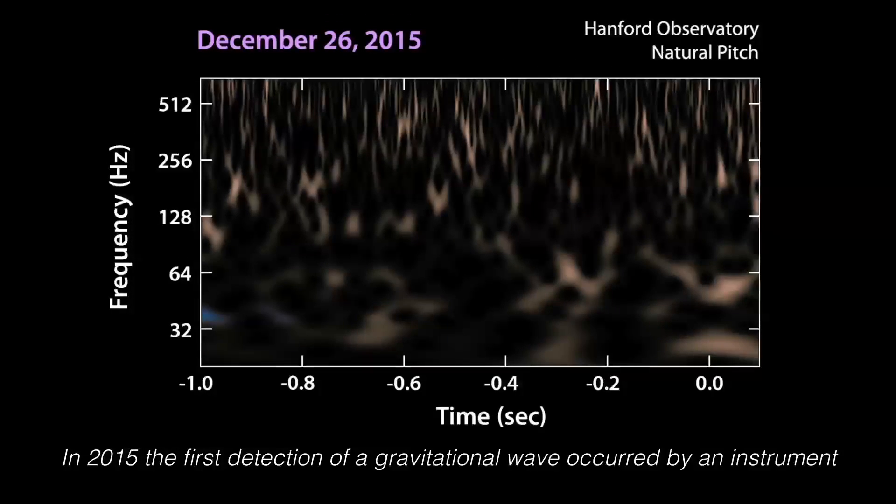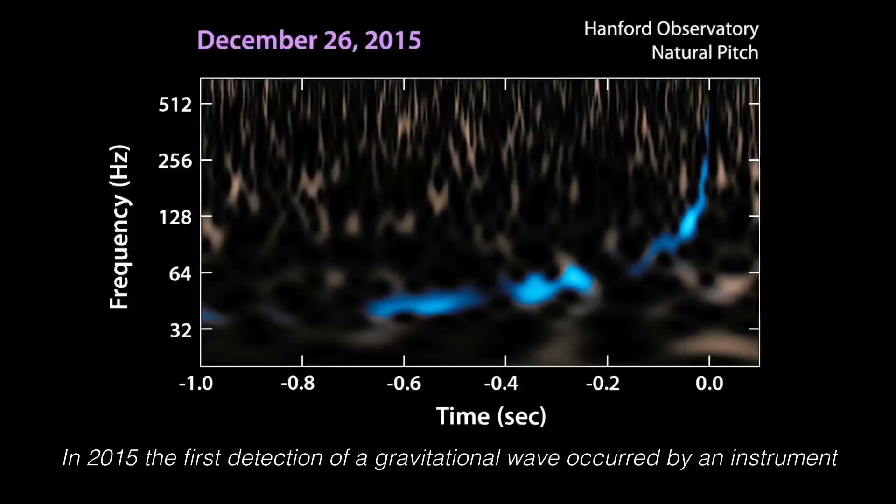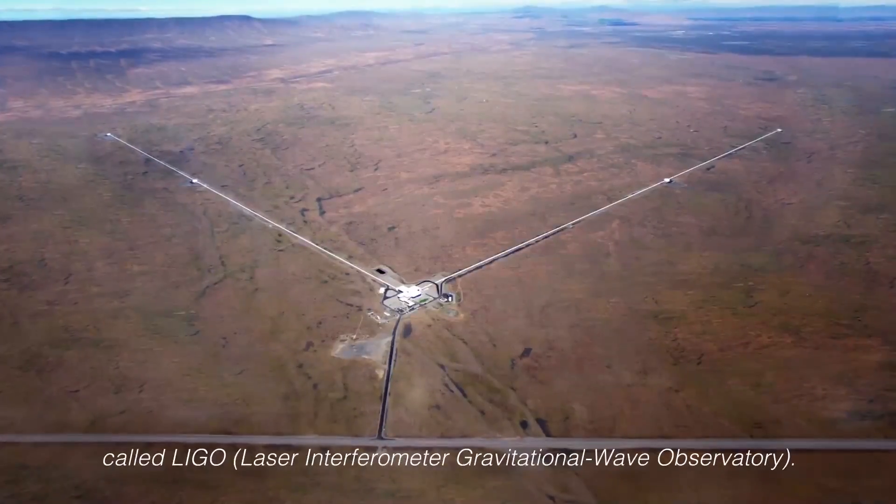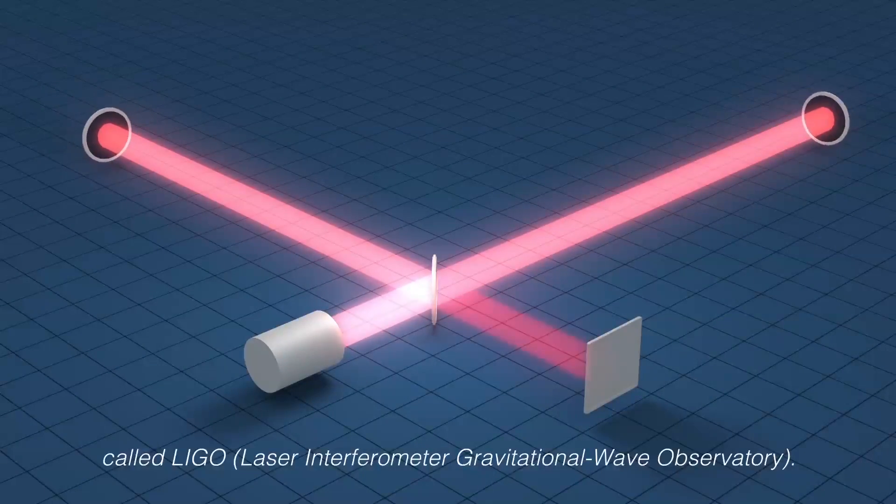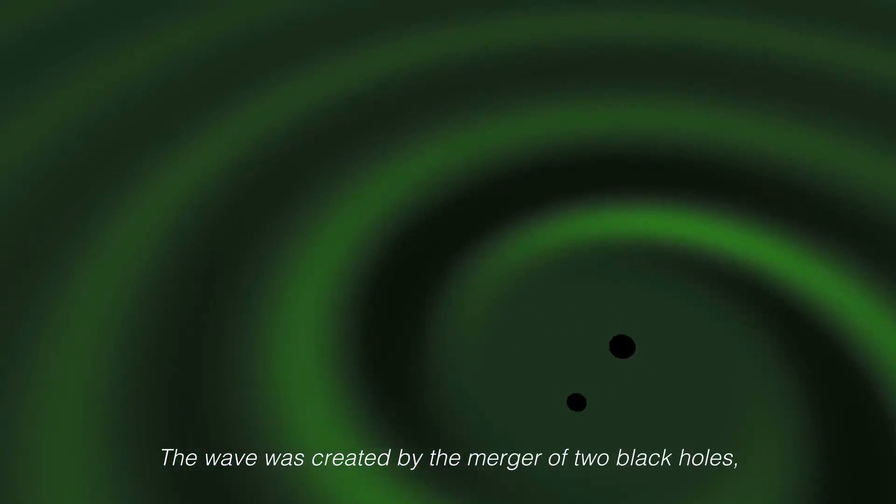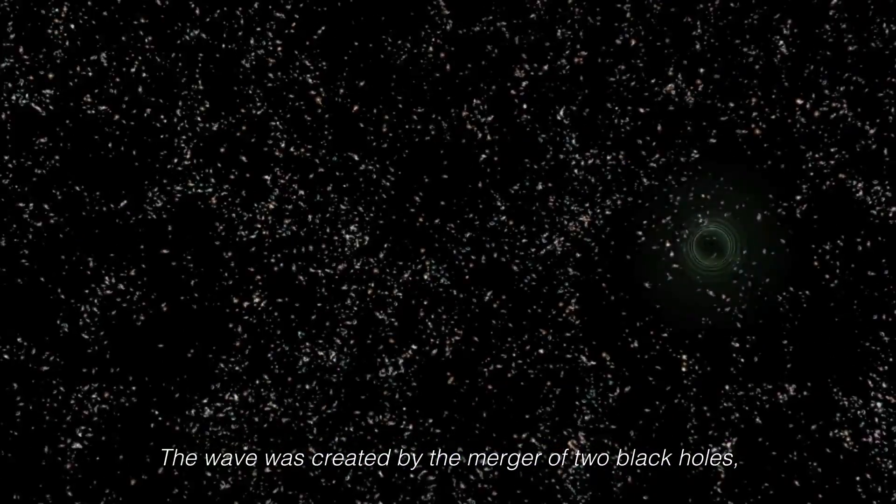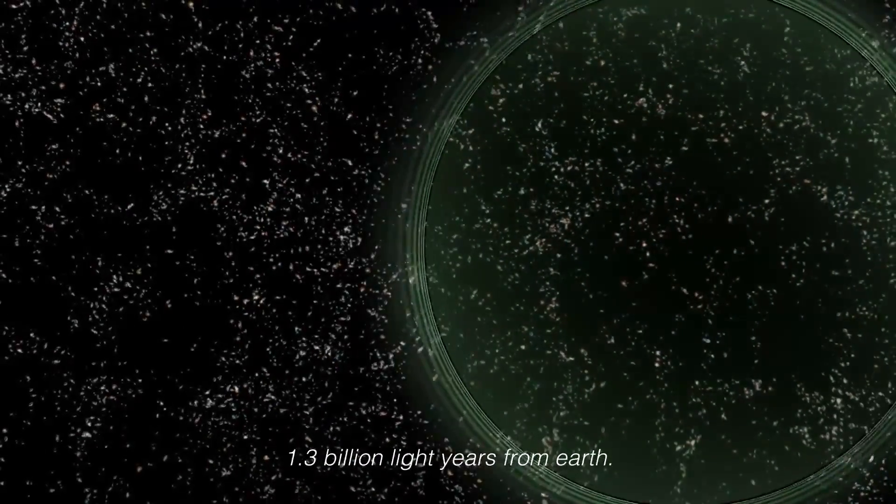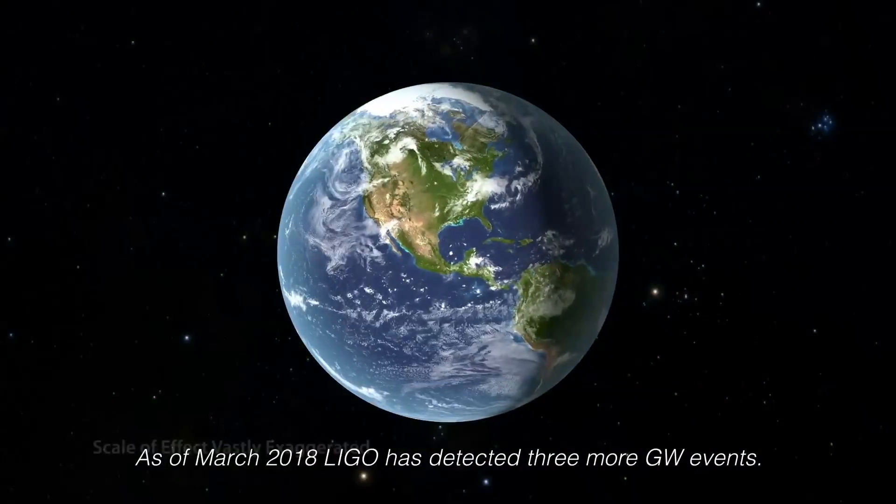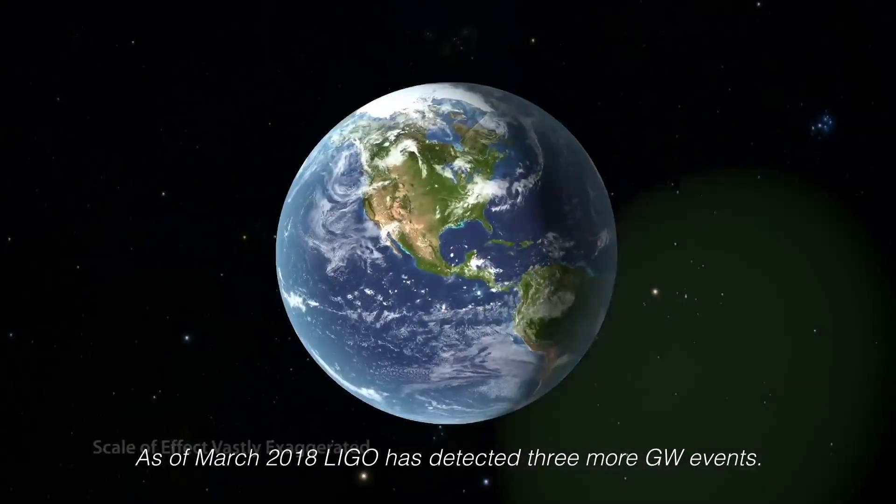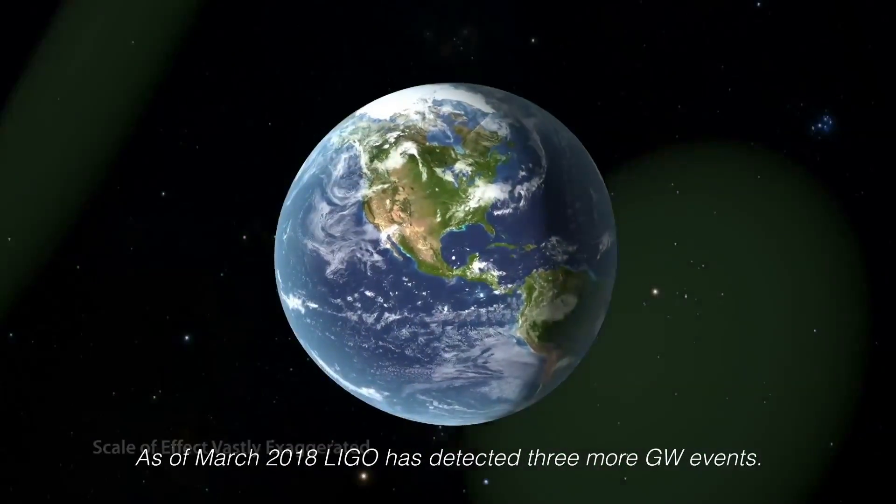In 2015, the first detection of a gravitational wave occurred by an instrument called LIGO, Laser Interferometer Gravitational Wave Observatory. The wave was created by the merger of two black holes, 1.3 billion light-years from Earth. As of March 2018, LIGO has detected three more GW events.